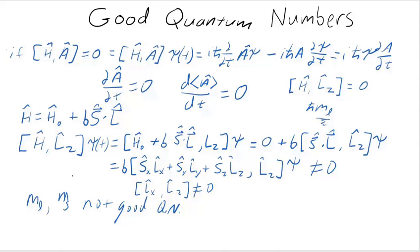Because the operators that have them as eigenvalues don't commute with the Hamiltonian. And when an operator does not commute with the Hamiltonian, its observable becomes time dependent. And so the quantum numbers are not stationary states. And that's why they're not good quantum numbers.